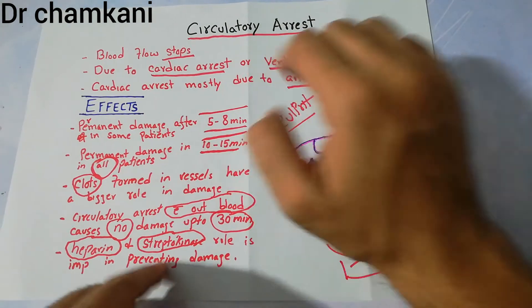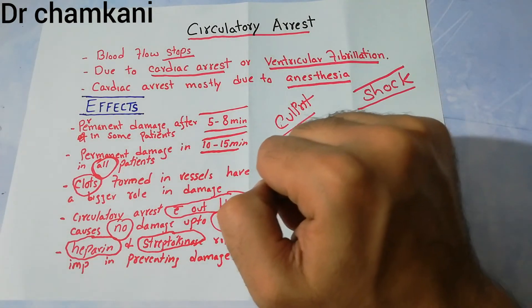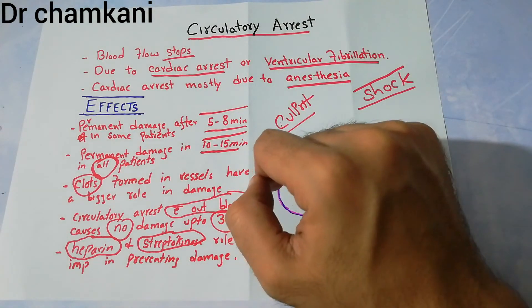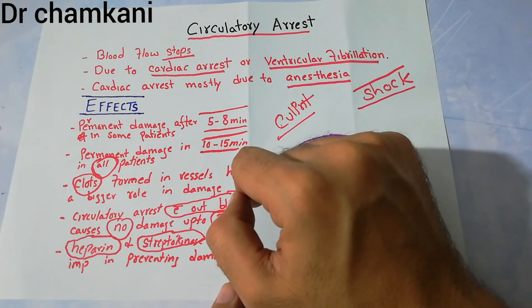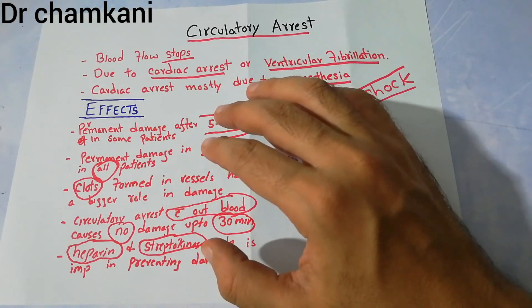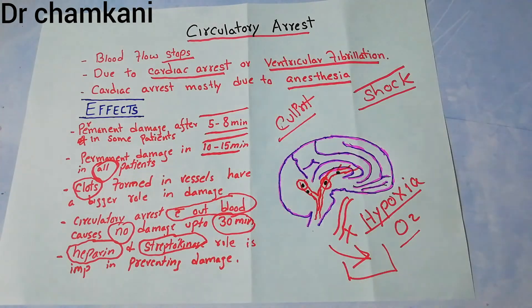That's all about circulatory arrest, and this was the last lecture of the cardiovascular system. Next, we will be starting the renal system. Thanks a lot for watching the video.